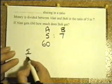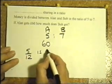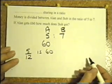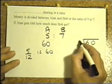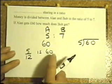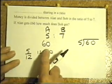5/12 of the amount of money being shared up is £60. So this time if we take the £60 and divide by 5.